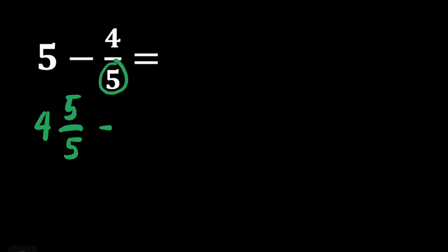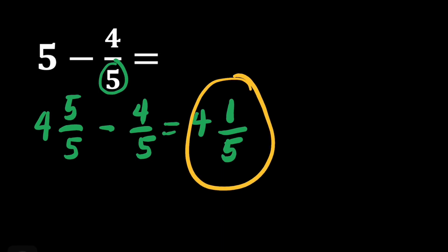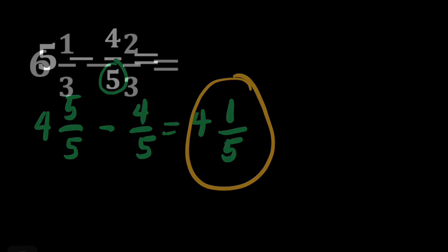Then we'll copy 4 fifths. You can just subtract. We'll copy 4, then 5 minus 4 is equal to 1, and then copy our denominator. So I think it's easier. And our answer for this question is 4 and 1 fifth.